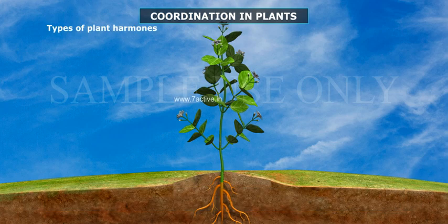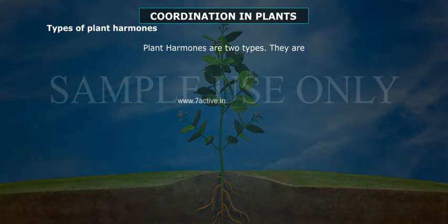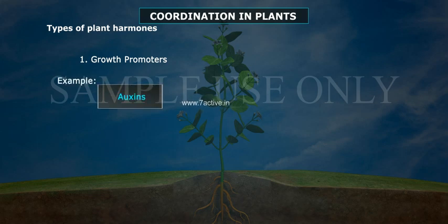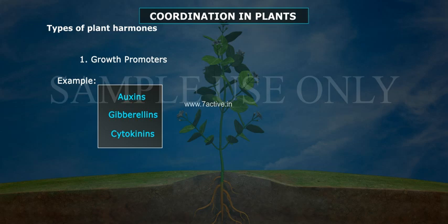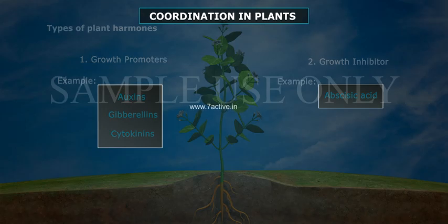Types of plant hormones: Plant hormones are of two types. 1. Growth promoters — examples include auxins, gibberellins, and cytokinins. 2. Growth inhibitors — example is abscisic acid.